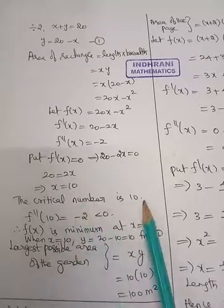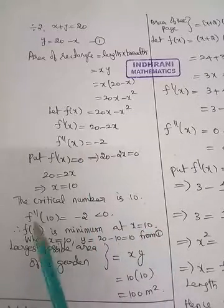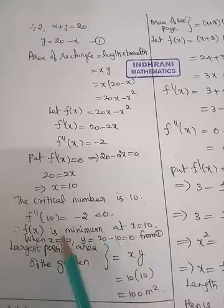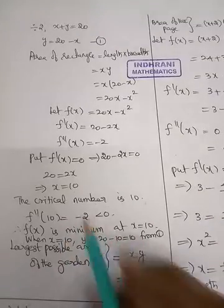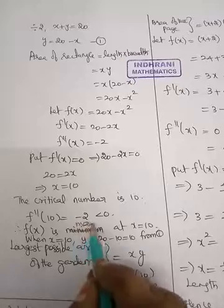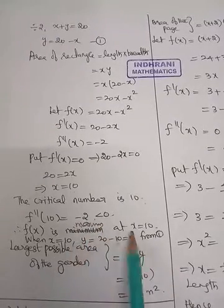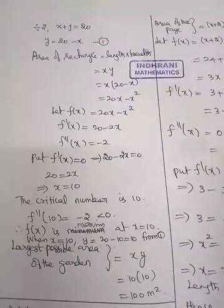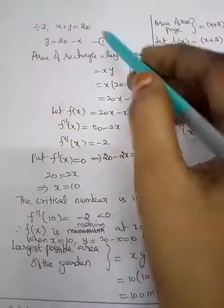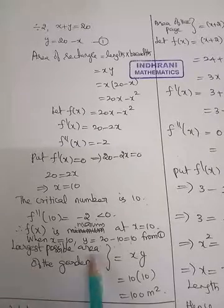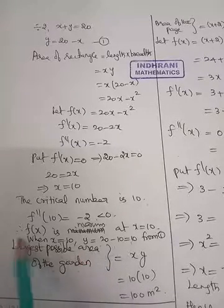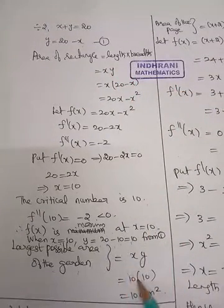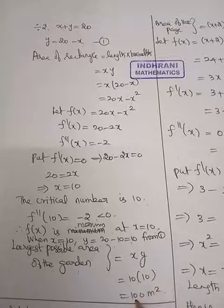The critical number is x equals 10. Since f double dash of x is minus 2, which is negative, the function has a maximum at x equals 10. From the equation y equals 20 minus x, y equals 10. Therefore, the largest possible area of the garden is x into y, that is 10 into 10, equals 100 square meters.